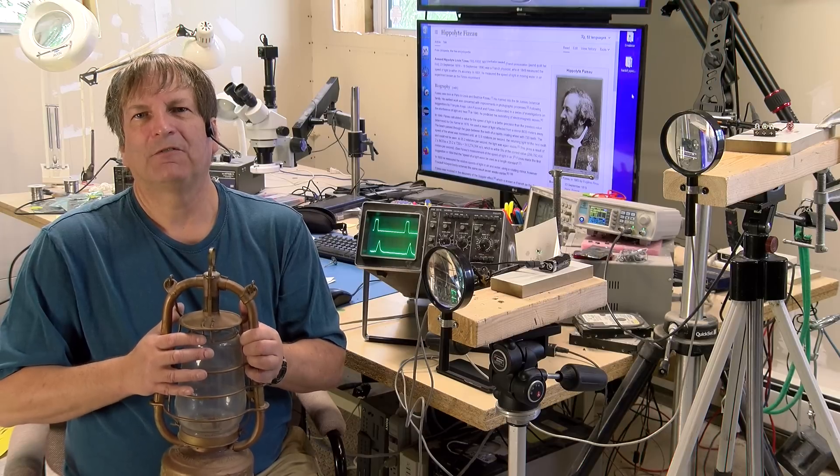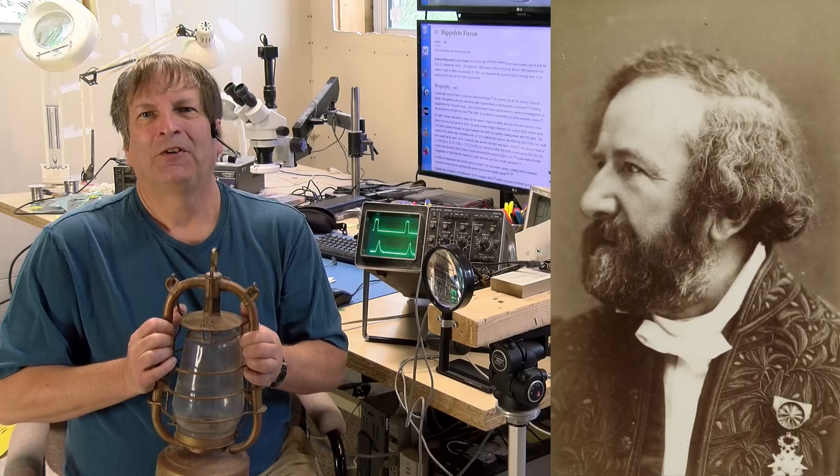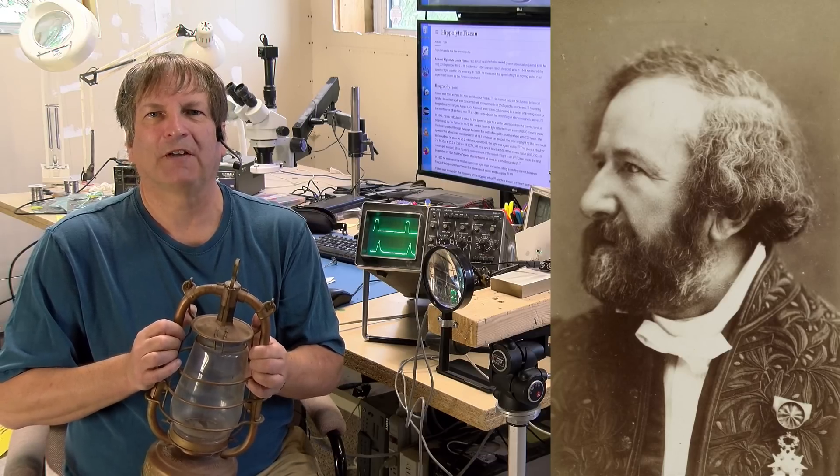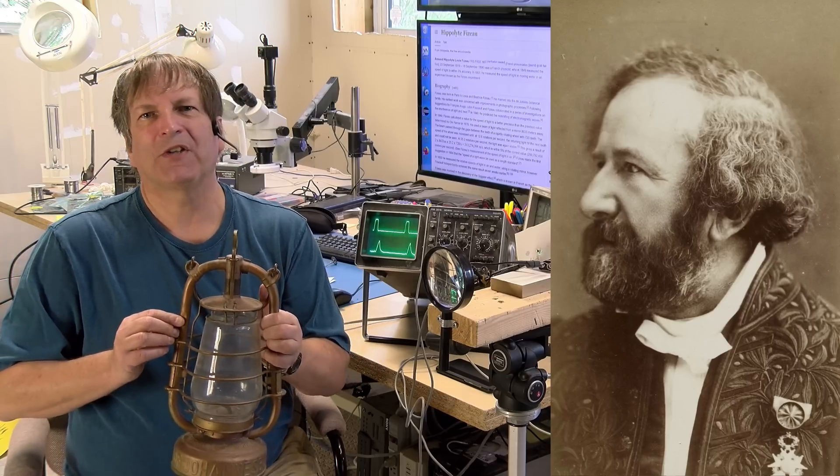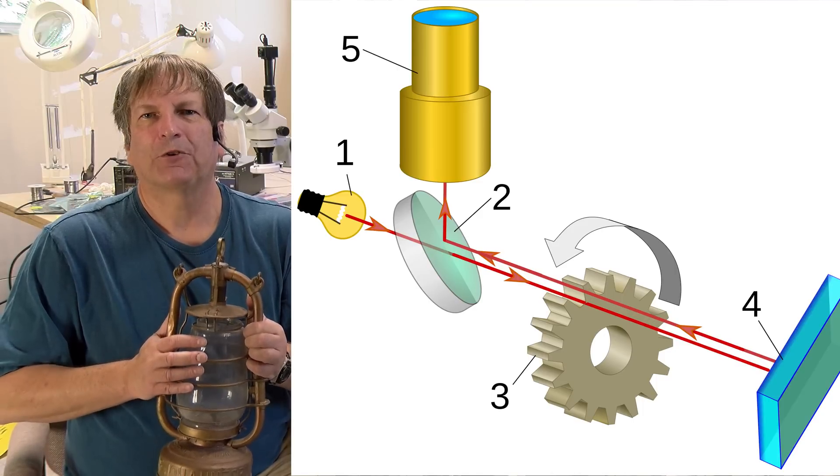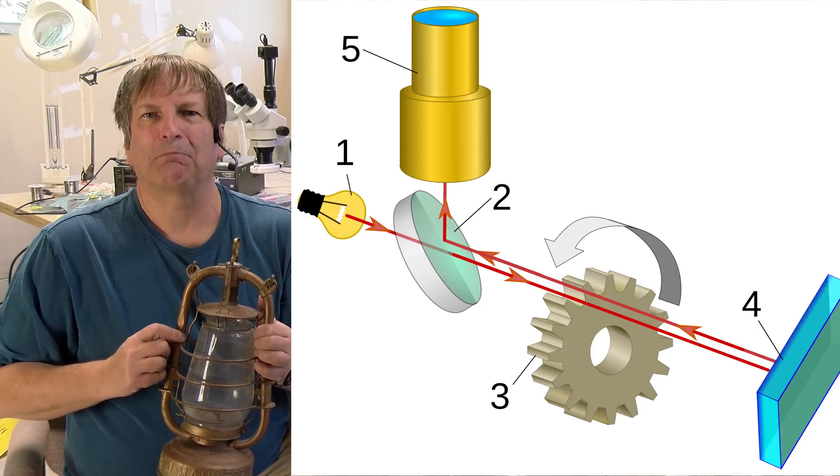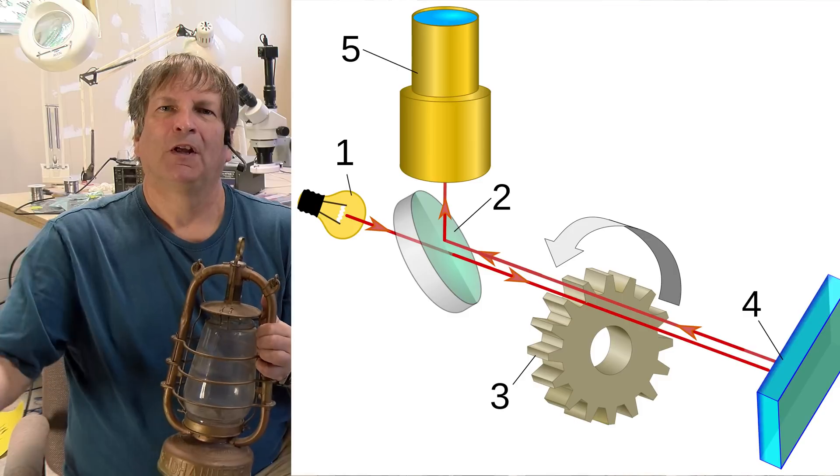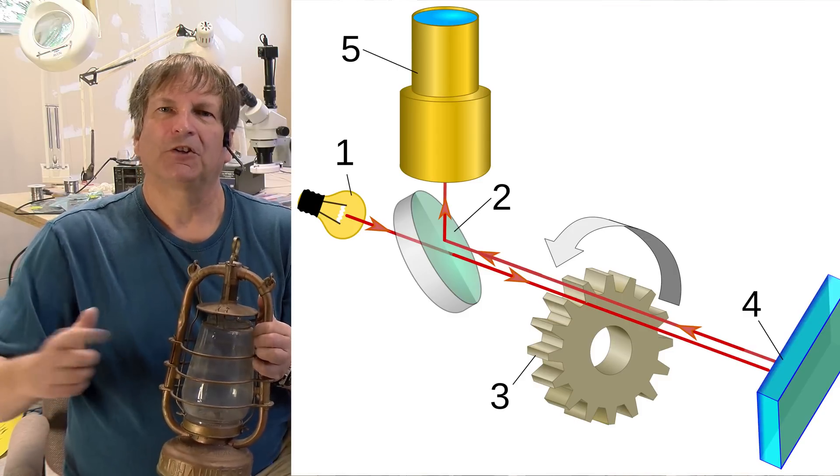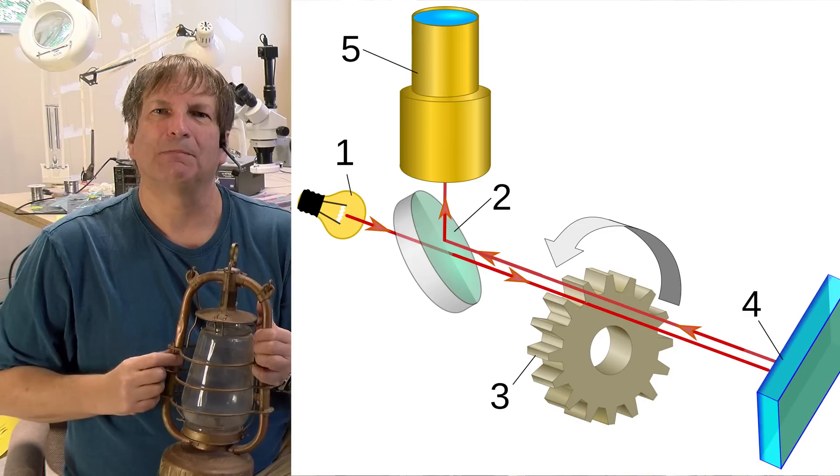It wasn't until 1849 when a Frenchman, Hippolyte Fizeau, did an ingenious experiment to actually measure the speed of light directly for the first time. He set up a cogwheel and had it spinning really fast. He shone a beam of light through the cogs to hit a mirror about 8 kilometers away and reflect that beam of light back. That reflection was set up to go right through those same cogs on the cogwheel. If it took a certain amount of time for the light to get to the mirror on the hill and then come back, that meant that the cogwheel would have advanced a few degrees.